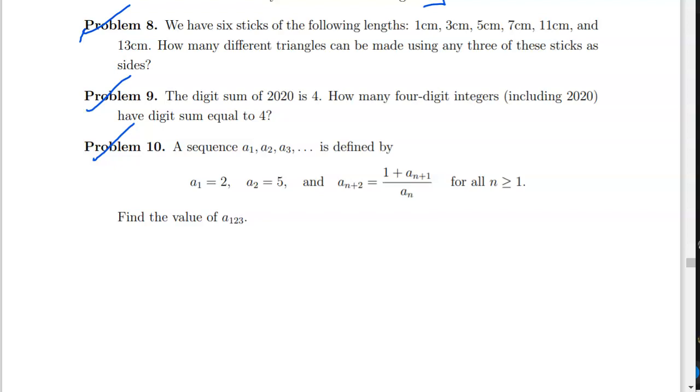So let's just look at the more complete ones, even though they appear shorter. So look over to problem eight. We have six sticks of the following lengths: 1cm, 3cm, 5cm, 7cm, 11cm, and 13cm. How many different triangles can be made using any three of these sticks as sides?